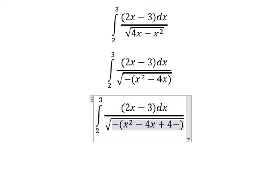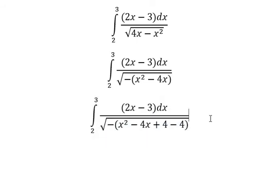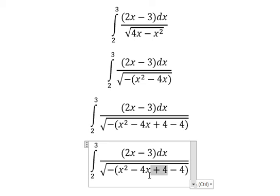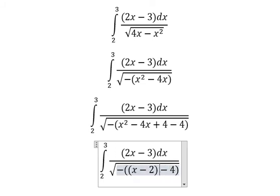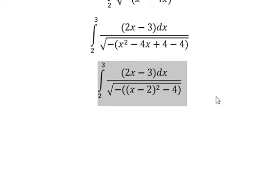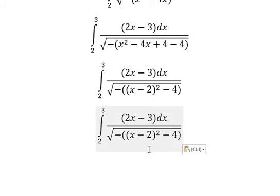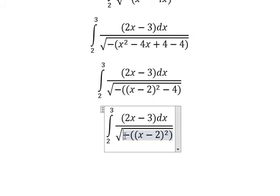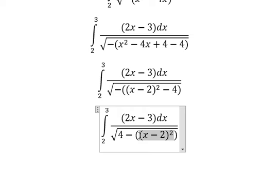Later we need to minus number 4. This one I just create about identity, that's about x minus 2 to the power of 2. Next, negative with negative we have positive, so we just have this one.